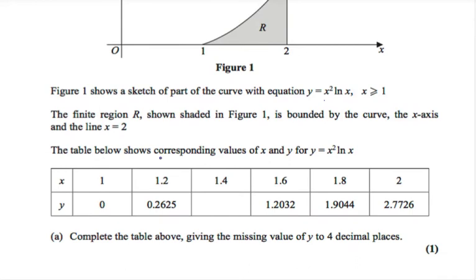The table below shows corresponding values of x and y for y equals x squared ln x. Part A says complete the table above, giving the missing value of y to 4 decimal places. So all we need to do is substitute 1.4 into here. We get y equals 1.4 squared times ln of 1.4, which gives us 0.6595.